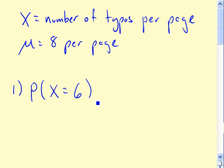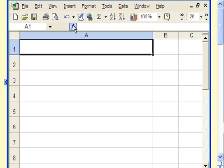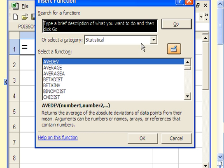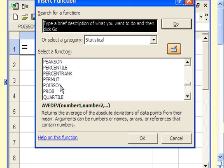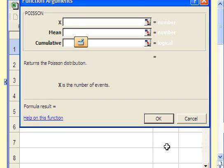Alright, so the probability that x equals 6 can be calculated using the formula for the Poisson distribution, but here we'll just go ahead and let Excel do the work for us. So here is what we get. Under our function browser again, in the statistical menu, we scroll down to Poisson. We have to give it three pieces of information. The number of occurrences of the thing we're looking for, so in this case it's typos. So for the first part here, it's 6.